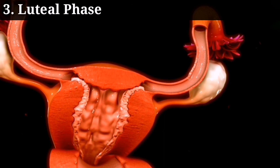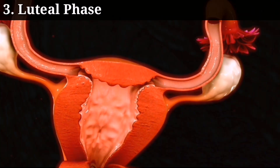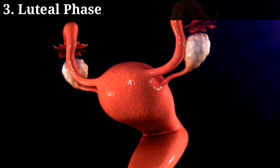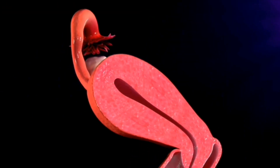The luteal phase is the third stage and lasts for around 14 days. During this phase, the ovaries produce progesterone which helps to maintain the lining of the uterus in preparation for pregnancy.